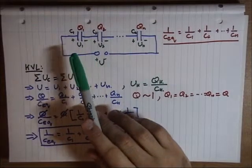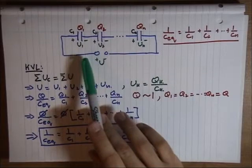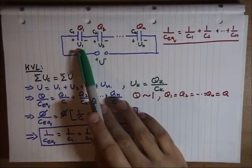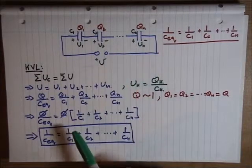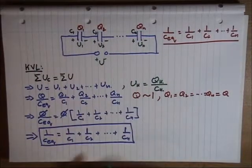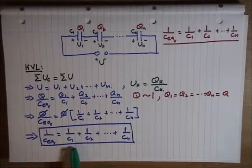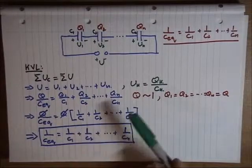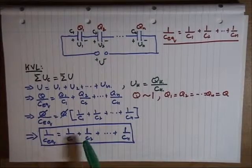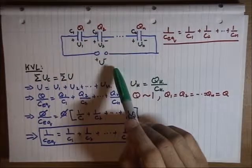in that topology, the equivalent resistance of the circuit was the sum of each individual element's resistances. In this case, the equivalent capacitance of capacitors in series is similar to the one when we had resistors connected in parallel instead.